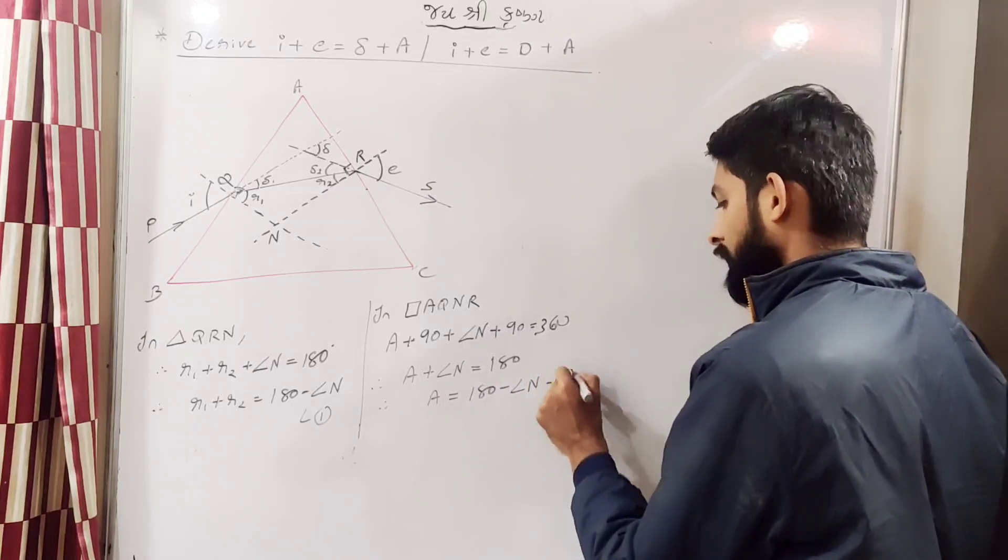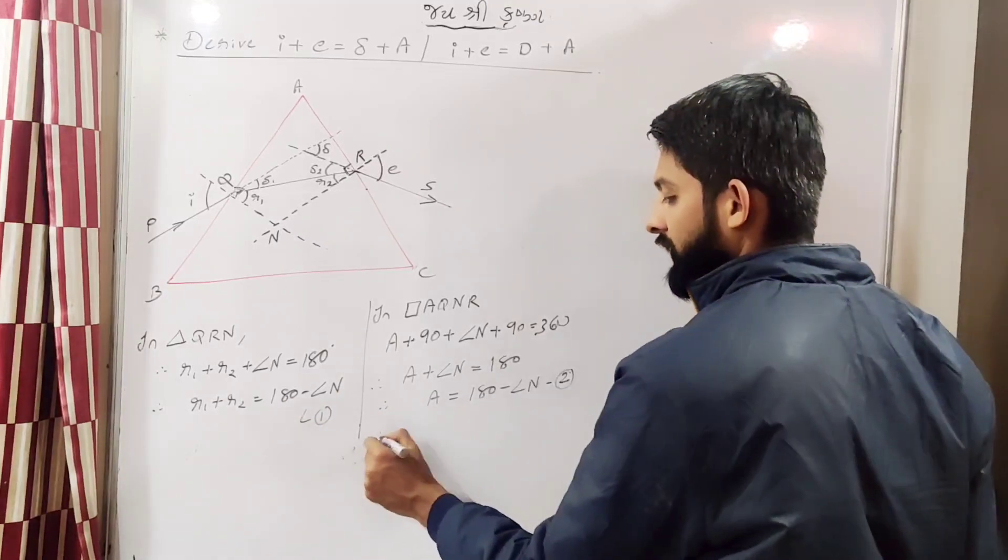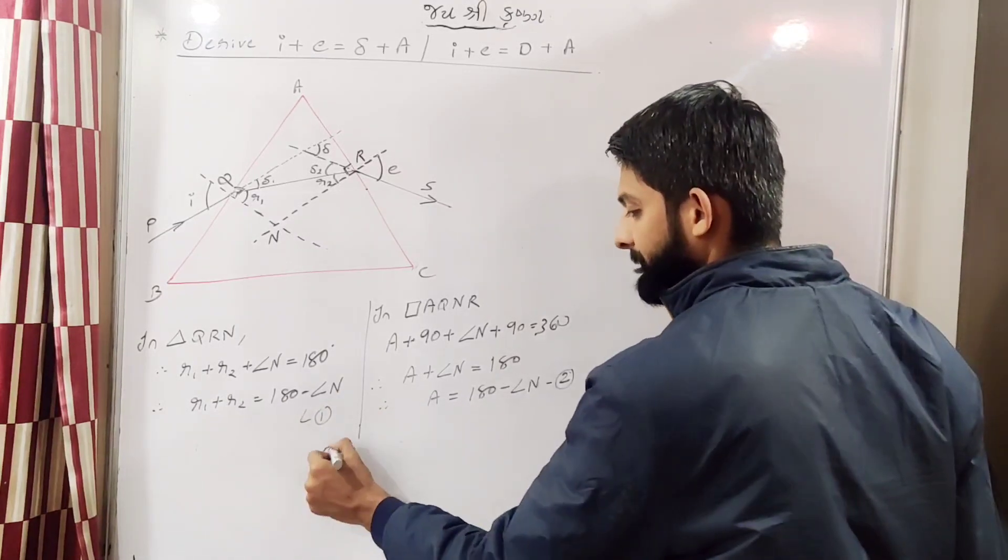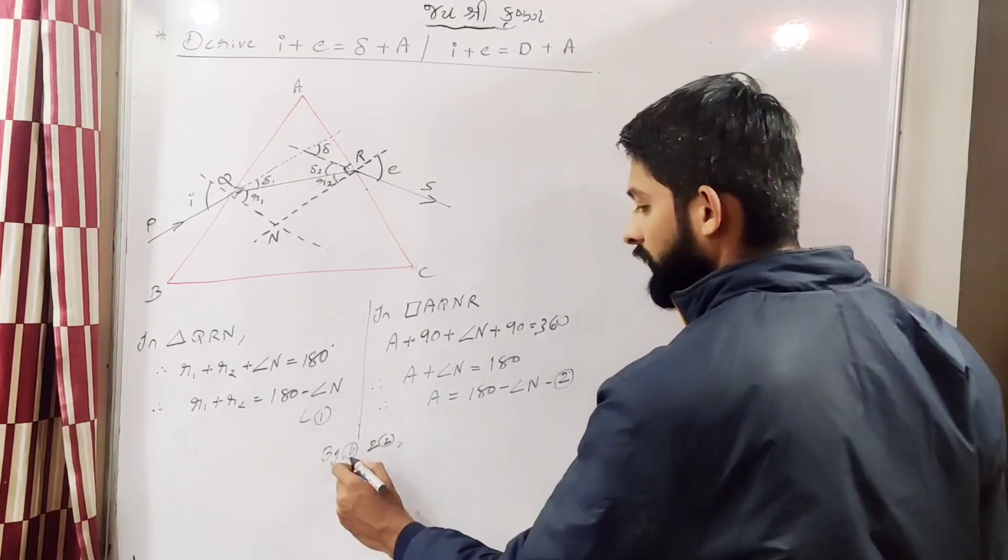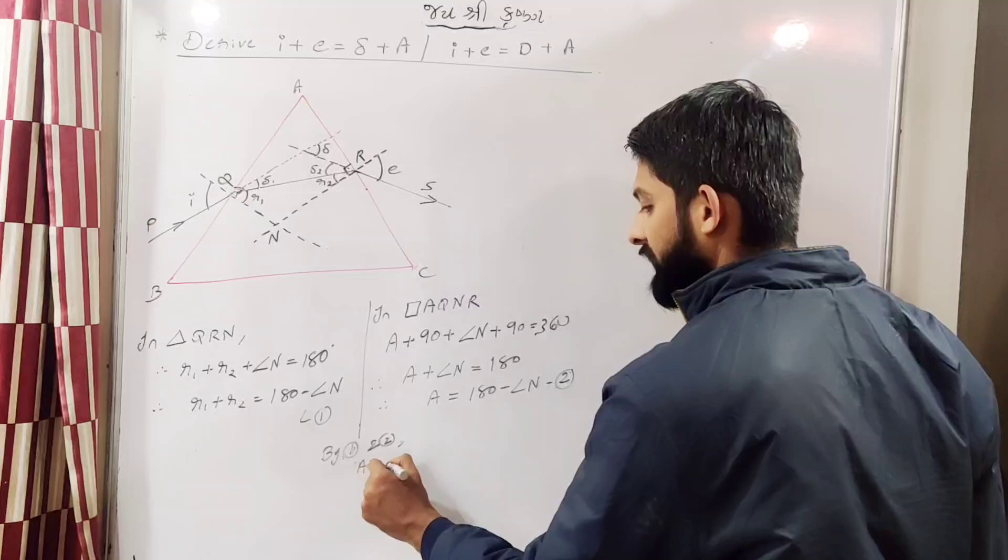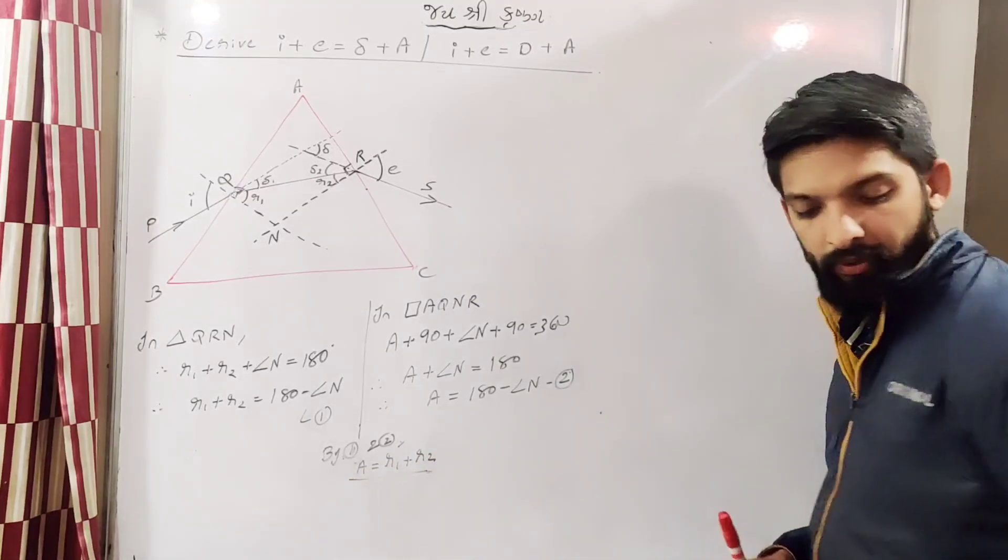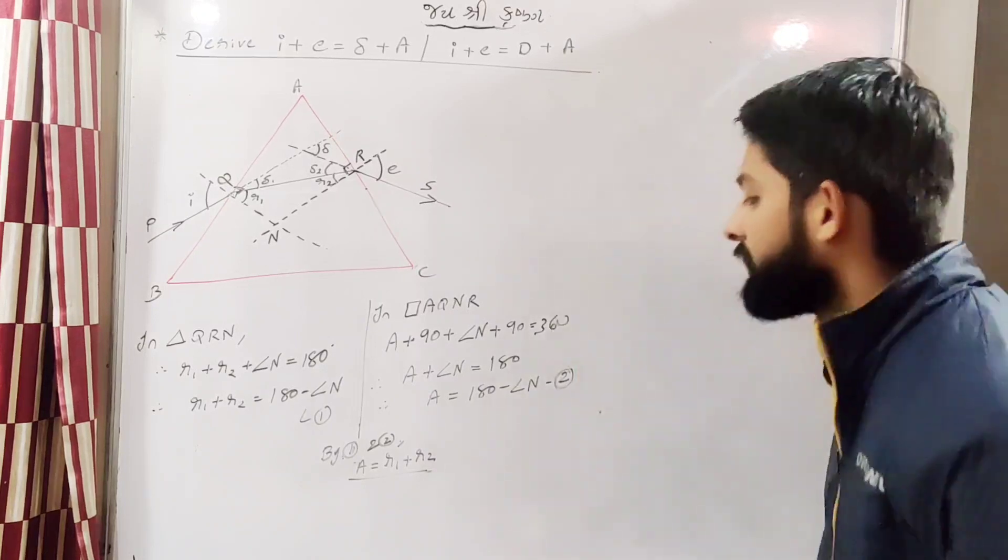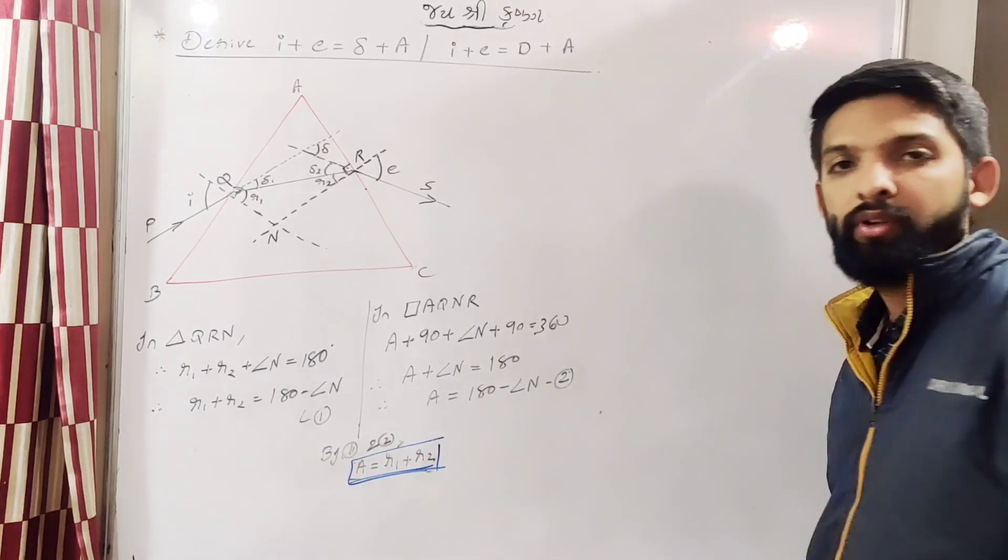You can easily compare this to 180 minus N. 180 minus N. So by 1 and 2, you will be having A is equal to R1 plus R2. This is your first result.